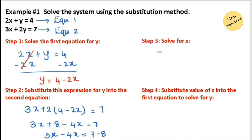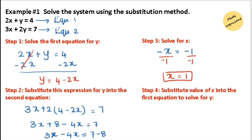Simplifying the x terms: 3x minus 4x equals negative x, and the constants 7 minus 8 equal negative 1. We need to simplify further by dividing both sides by negative 1. Dividing negative x by negative 1 and negative 1 by negative 1, the value of x equals 1, because we keep x positive.